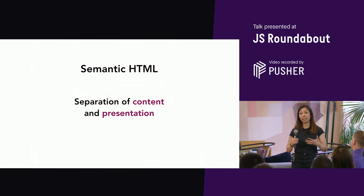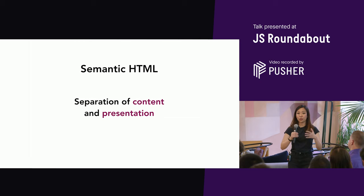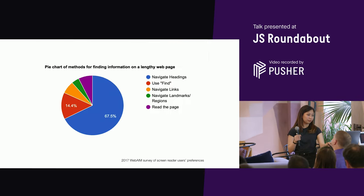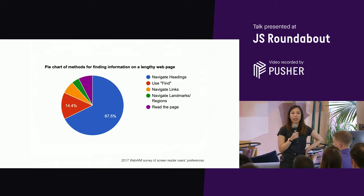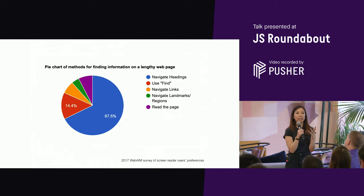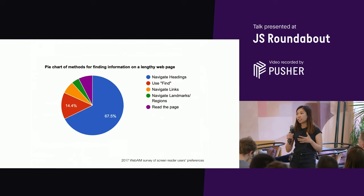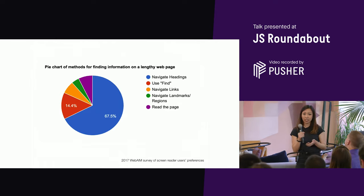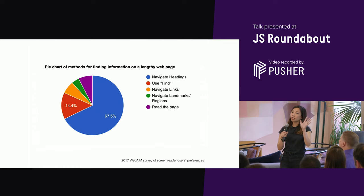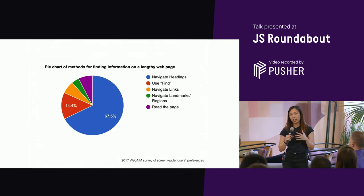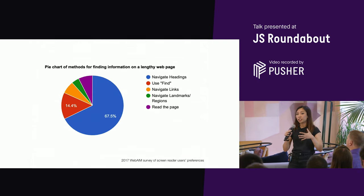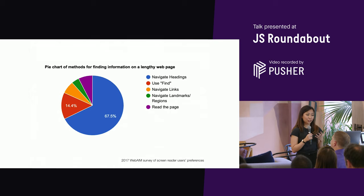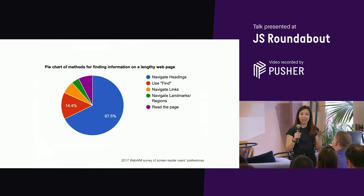The other point on semantic HTML is the separation of content and presentation. Don't use an element just because of the style it gives you. A common example is using an h1 because you want big text — don't do that. Headings are more important than you think. In a 2017 study by WebAIM, they asked screen reader users how they find information on a page they haven't visited before, and almost 70% said they use headings to find that information.